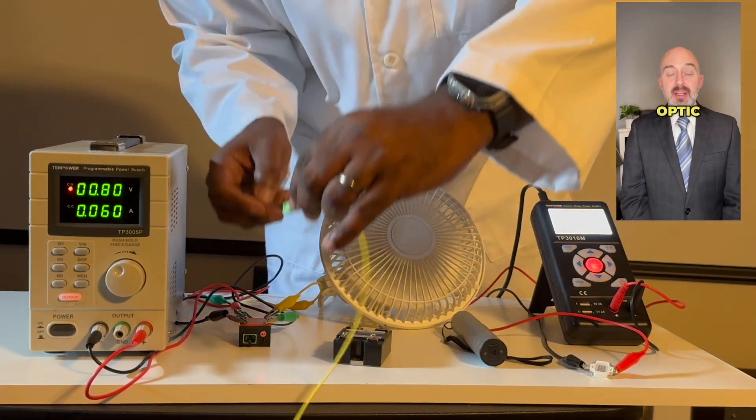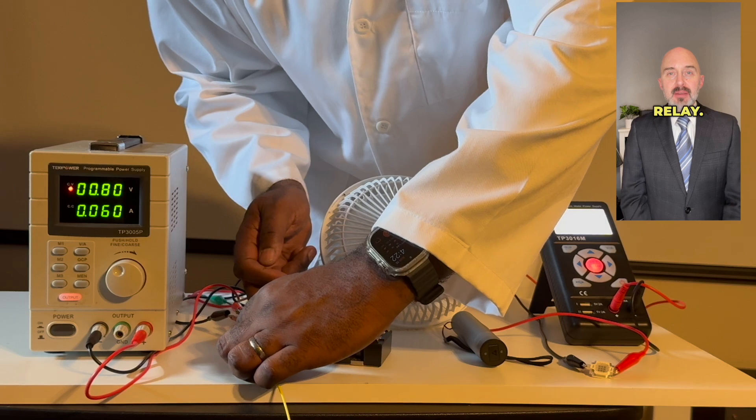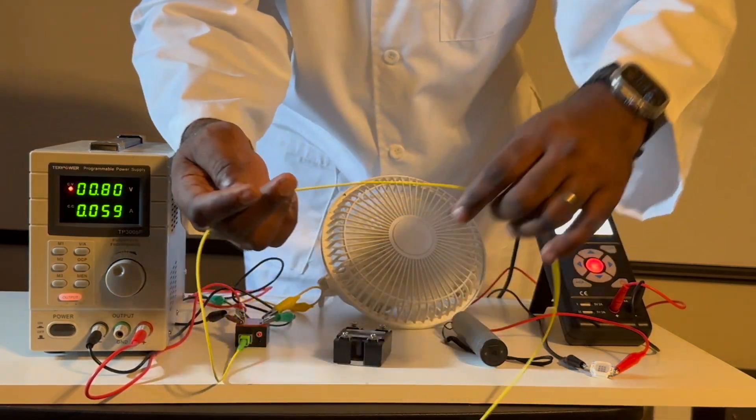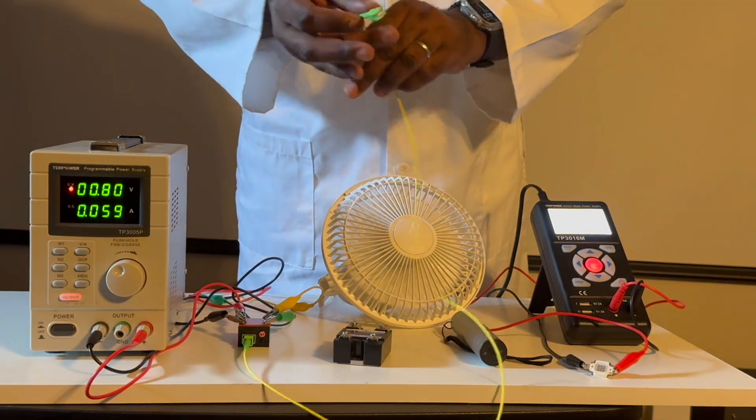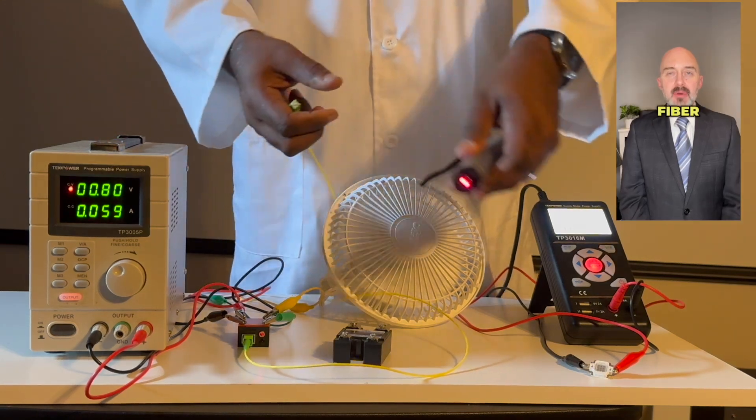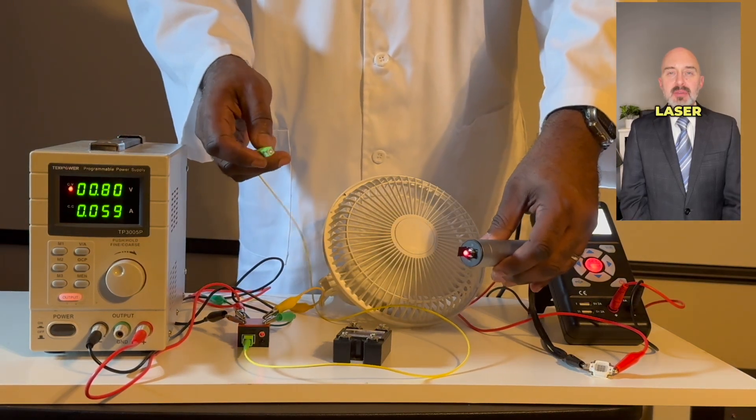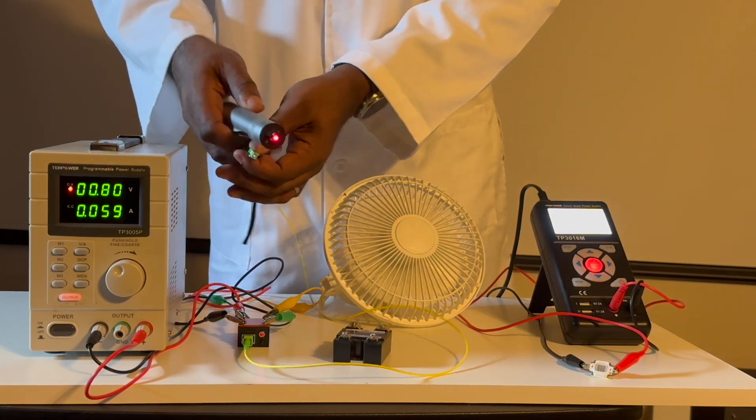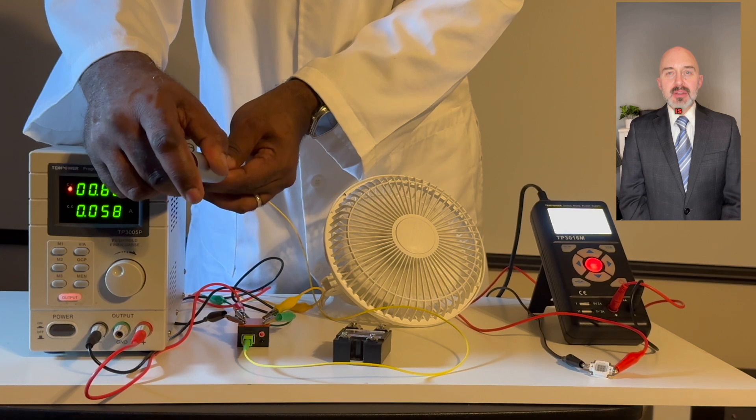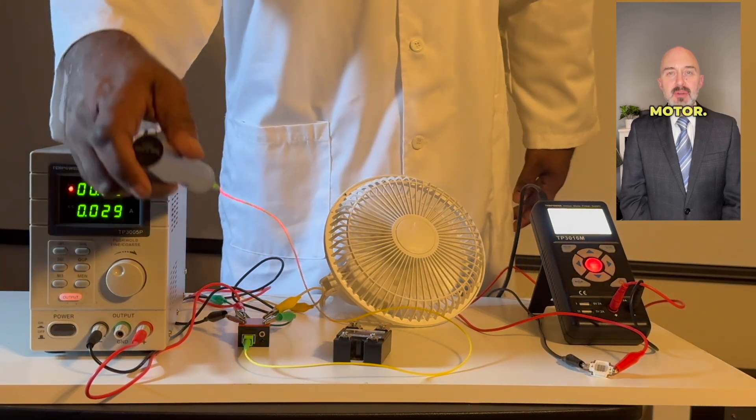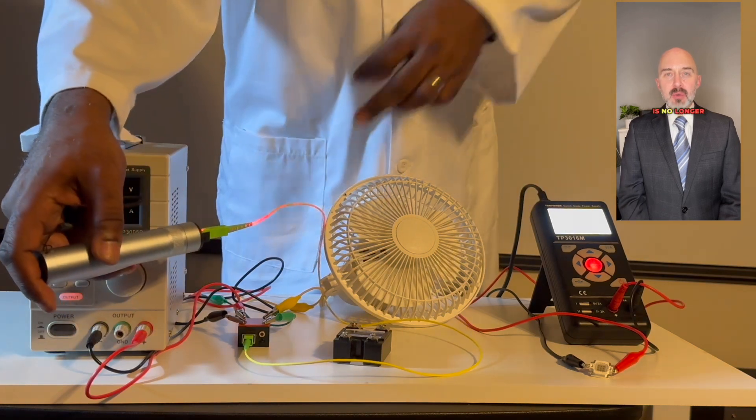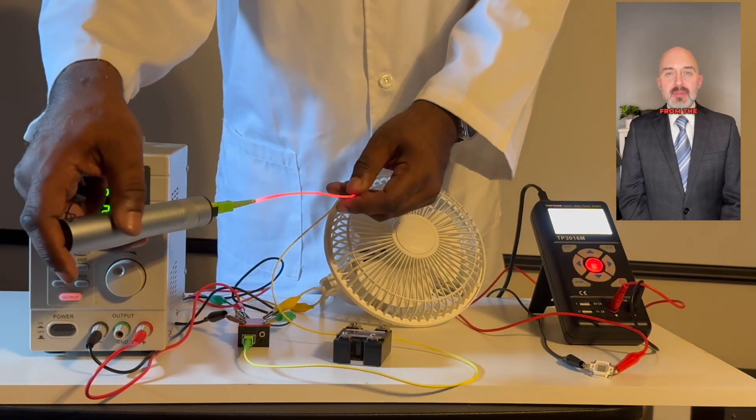We are now connecting a fiber optic cable to the ultra-low-powered relay. We are now connecting the fiber optic cable to a laser source. When the relay is exposed to laser light, it will terminate power to the fan motor. The fan motor comes to a stop and will remain powered off until the relay is no longer exposed to the laser light from the fiber optic cable.